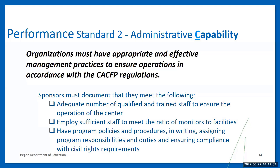Sponsors can demonstrate administrative capability by having an adequate number of qualified and trained staff, ensuring the effective operation of the center or site, employing sufficient staff to manage the requirements of the program — for example, multi-site sponsors must ensure there are enough monitors to meet the ratio of monitors to facilities — and sponsors must have program policies and procedures in writing, ensuring compliance with USDA child nutrition program civil rights requirements.